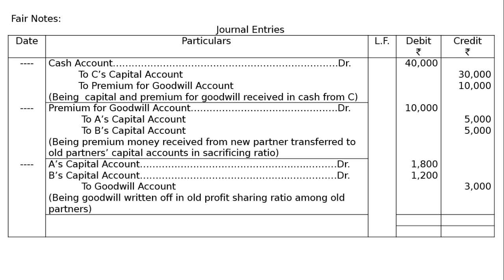The total of both the debit and credit columns will be Rs. 53,000. This is the final answer.